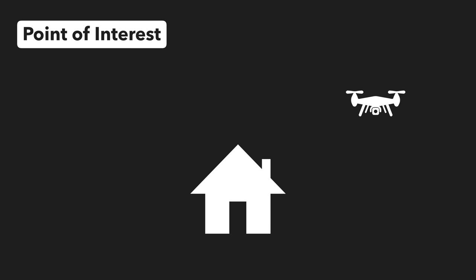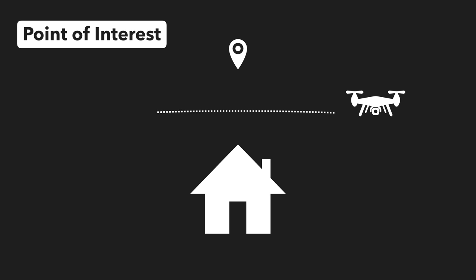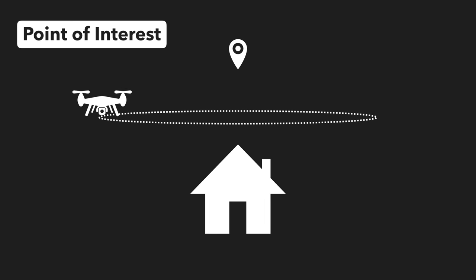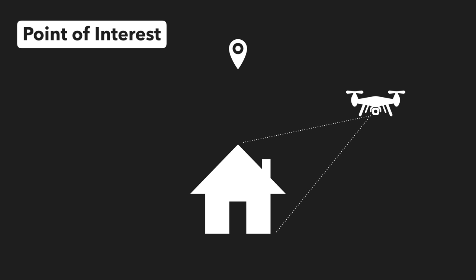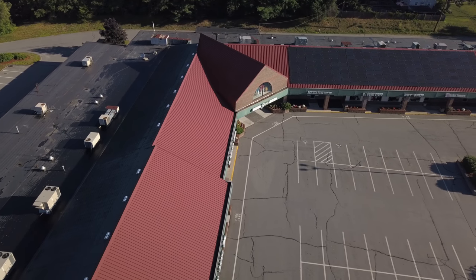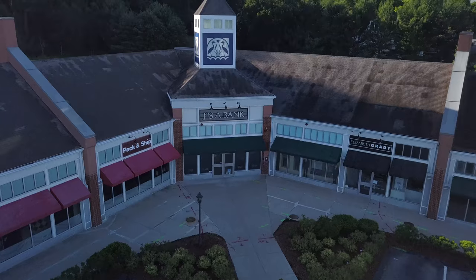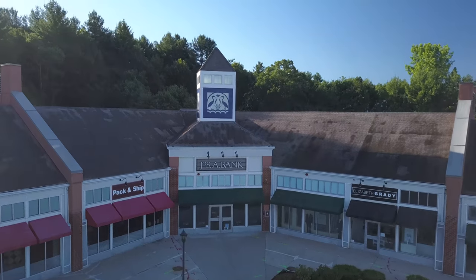First, let's go over the concept behind Point of Interest. The idea is you use your drone to mark a desired subject as your point of interest. You back away from that subject, creating a radius, and then your drone will automatically begin to orbit the defined point while keeping the camera focused on the subject. Having the drone on this automatic flight path frees up the pilot to focus more on cinematic camera moves, showcasing the subject in a variety of creative new ways.